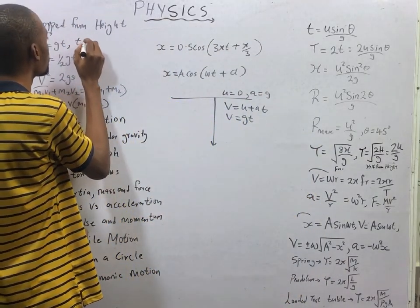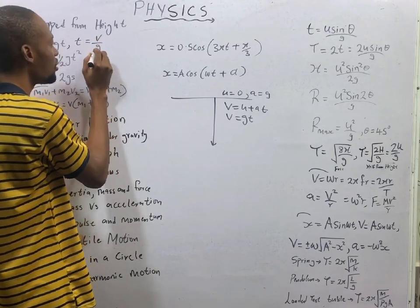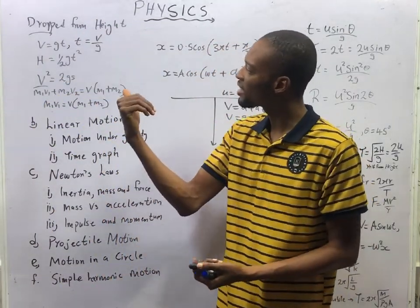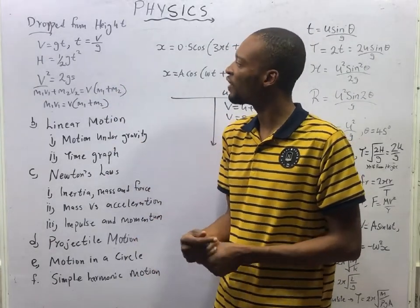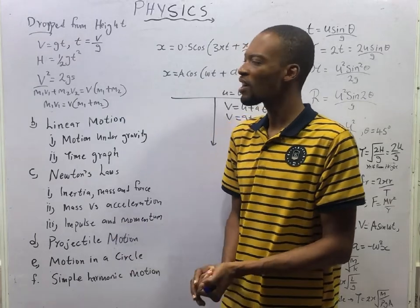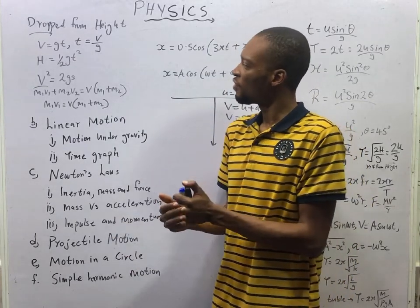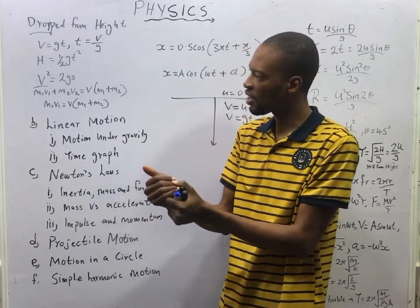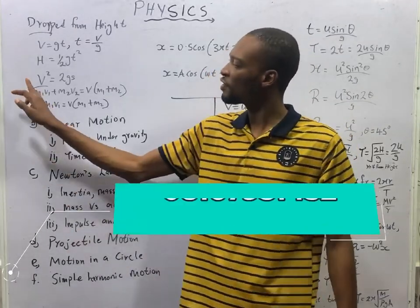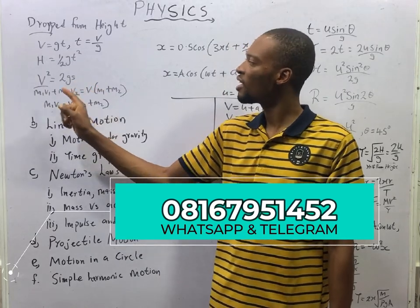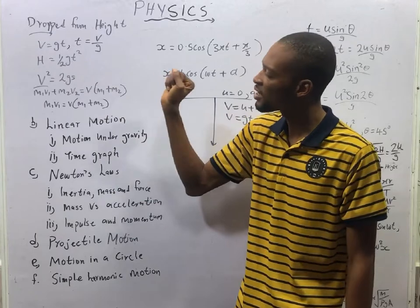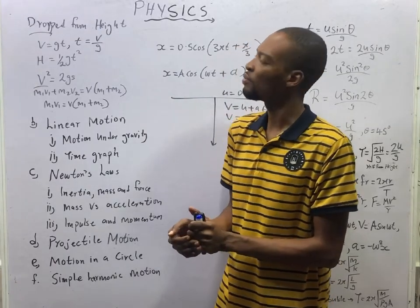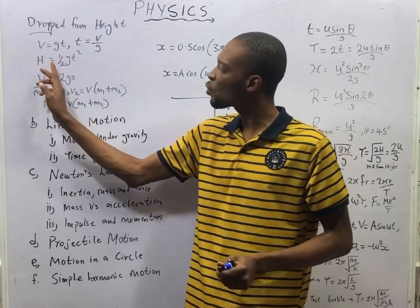From here we can say that T equals V over G. The time for an object to reach the ground when dropped from height is the velocity over acceleration due to gravity. From the second equation of motion, V² equals U² plus 2AS. Since for motion under gravity U is zero and A equals G, we get H equals ½GT².